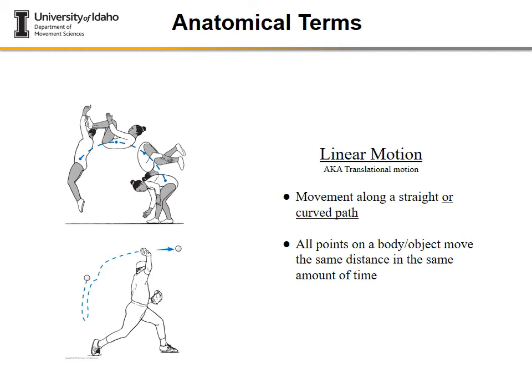We're first going to talk about a couple types of motion geared towards human motion. Linear motion is also referred to as translation of motion — those are two different terms for the same type of motion. It's important to understand that linear motion can be along a straight path or along a curved path. The key component is that all points in the object move the same distance in the same amount of time.